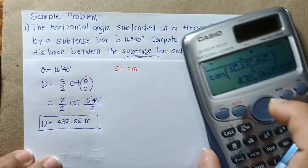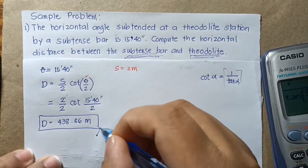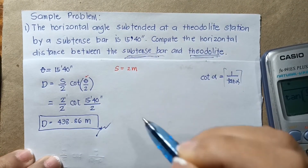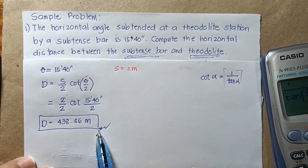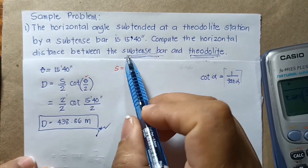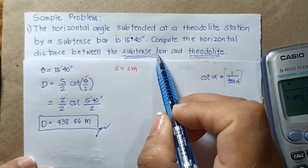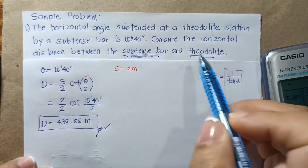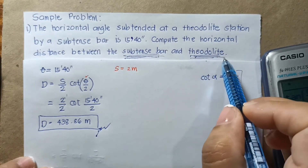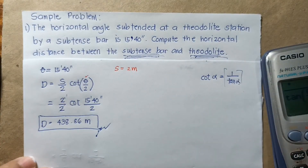So 438.86 meters is the answer — the horizontal distance between the substance bar and the theodolite.